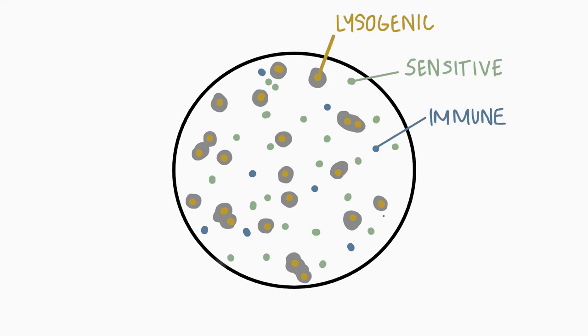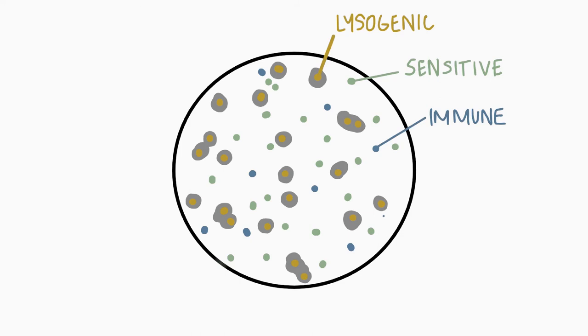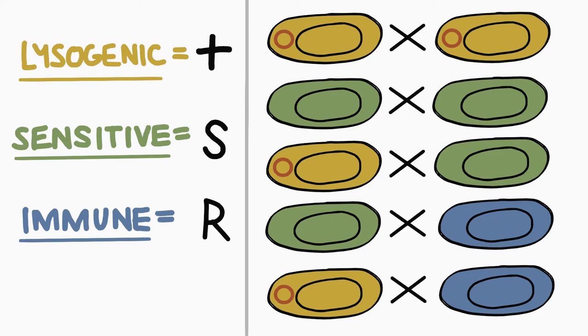This revealed lysogenic colonies surrounded by a zone of lysis, while sensitive and immune phenotypes grew normally. Crosses were subsequently conducted among phenotypes to determine which nuclear or cytoplasmic factors were responsible for the lysogeny of lambda.